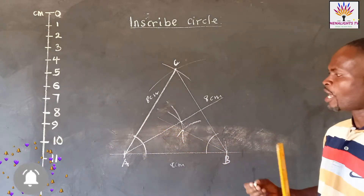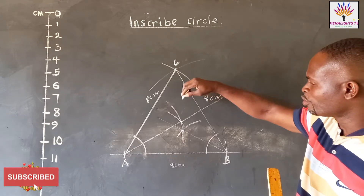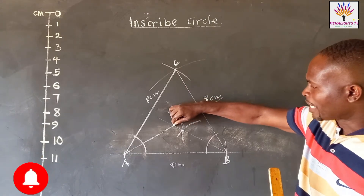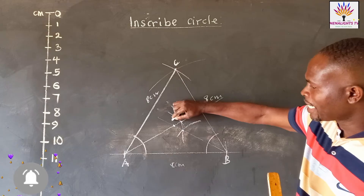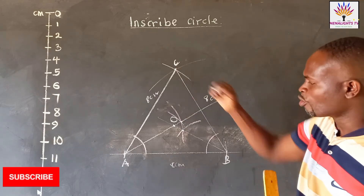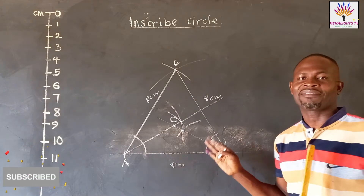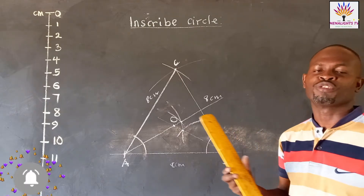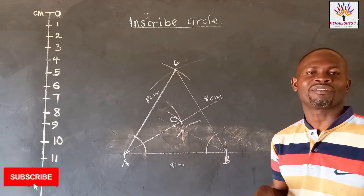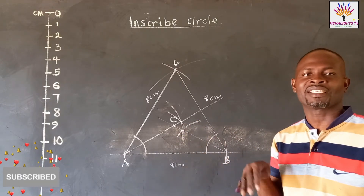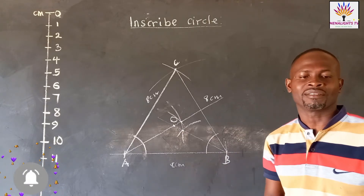So now let's locate the point of intersection of the two bisectors and name that place as O. Now that we have our origin O, we are going to draw a circle to touch the three sides of the triangle, and this circle is going to be within the triangle.